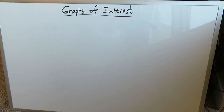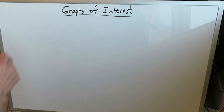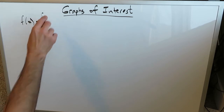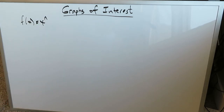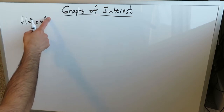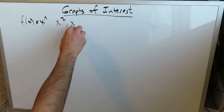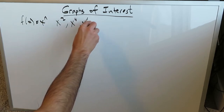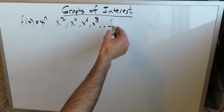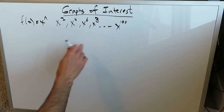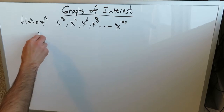I'm going to use this video to expand our knowledge base with regards to these graphs. The first graph I'm going to look at is f(x) = x^n where n is an even number. We've very frequently looked at x squared, but here we're looking at cases where n is an even number — items like x to the 4, x to the 6, x to the 8, and you can keep going all the way up to x to the 100.